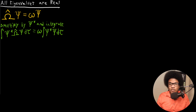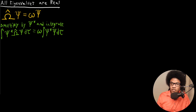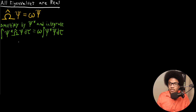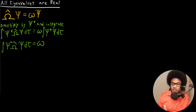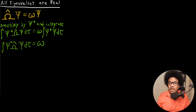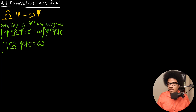Now, if this wave function is normalized — and we're going to assume that the wave function is normalized — then the evaluation of this integral is just going to be one. Normalized wave functions are normalized to one; this is just the same as the probability density. So if it's normalized, this simplifies to: the integral of psi-star times the operator acting on psi, d tau, is just going to be equal to the eigenvalue omega.